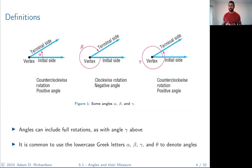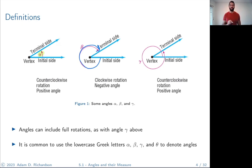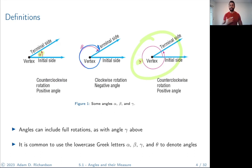Angles can include full rotations. Here are examples of a couple of angles with vertex, initial side, and terminal side. Angle alpha is similar to the one just drawn. Angle beta is a negative angle — it's being measured in the clockwise direction. Angle gamma is more than a full rotation. So angles can be negative, positive, more than a full rotation, or a partial rotation.